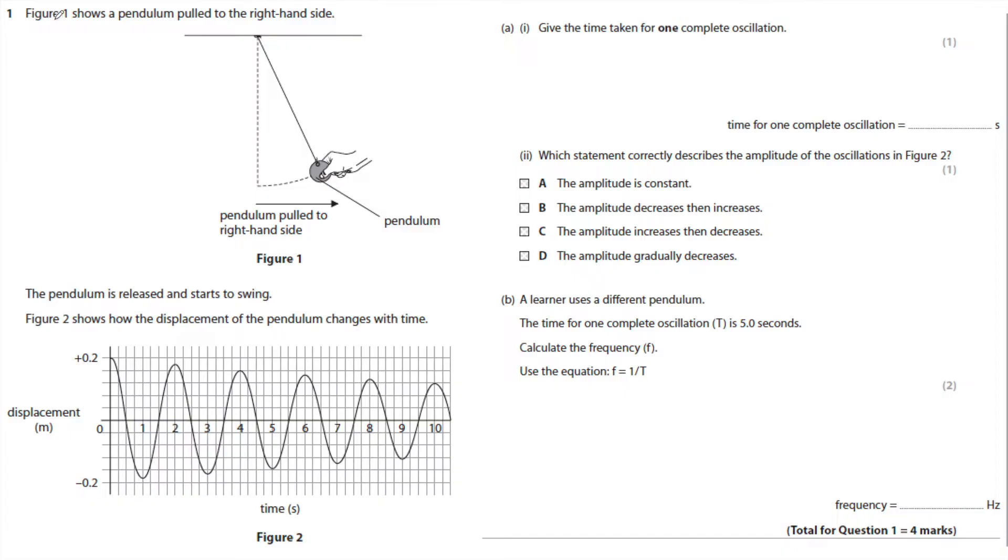In this first question, figure one shows a pendulum pulled to the right hand side. Remember, a pendulum will oscillate and do a cycle. That is a quarter of a cycle, that is half a cycle, that is three quarters, and that is back to a whole cycle. The pendulum is released and starts to swing. Figure two shows how the displacement of the pendulum changes with time.